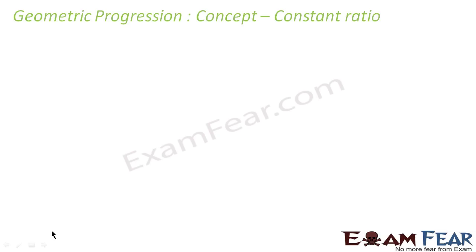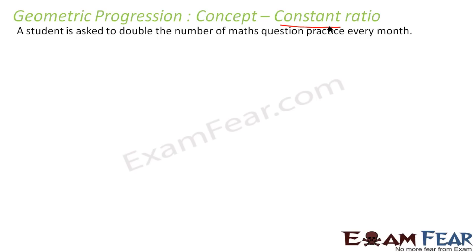In geometric progression we have a constant ratio. We will take a scenario — the same scenario we have discussed earlier: a student is asked to double the number of math questions he practices every month.